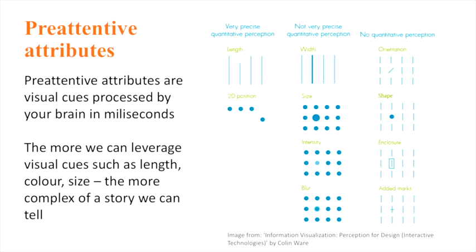The less precise attributes are width and size. People aren't that good at seeing that something is twice as wide, but they're much better with length. Same with size — you can see that something is bigger, but it's really hard to tell if it's a third bigger or twice as big. This is the problem with pie charts: people don't do area well. It's really hard for them to compare one area to another and see how much bigger one is. With intensity, you can see dark versus light, but you can't say that the dark pink is five times as dark.